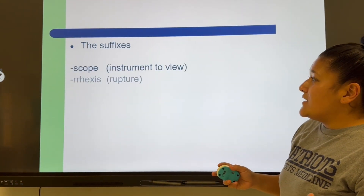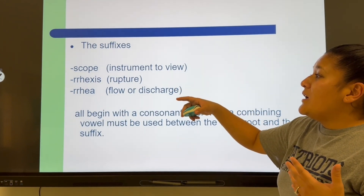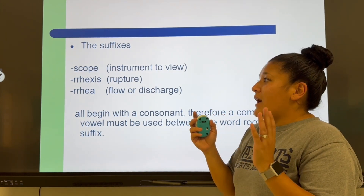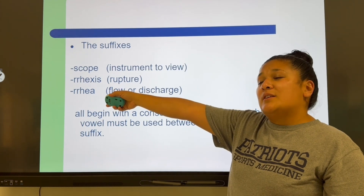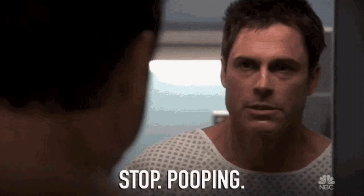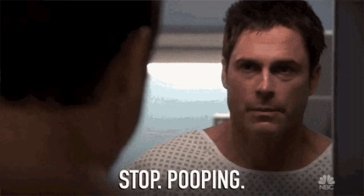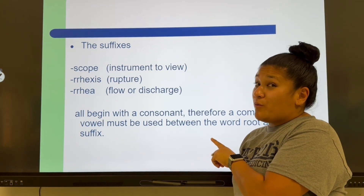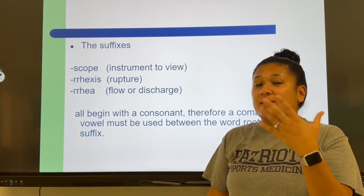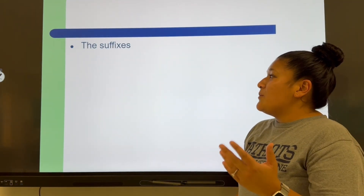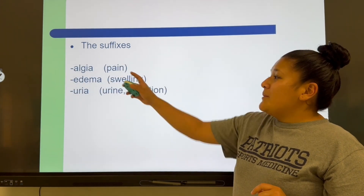More suffixes: -scope means an instrument to view; -rrhexis means a rupture; and -rrhea means flow or discharge. A very common example is diarrhea — that's where you have a lot of flow or discharge. Another use of -rrhea is rhinorrhea: rhino means nose and rrhea means flow or discharge, so rhinorrhea means a really runny nose.